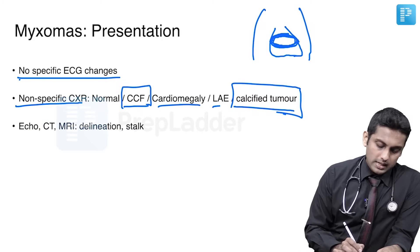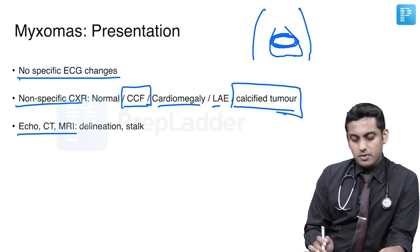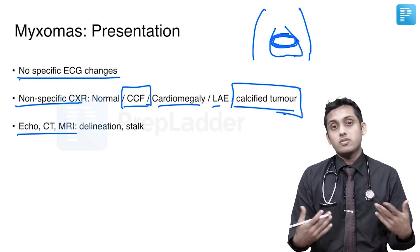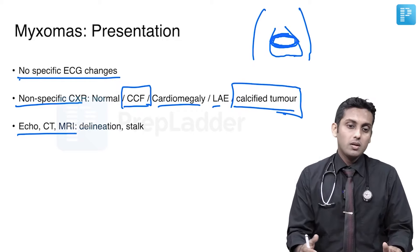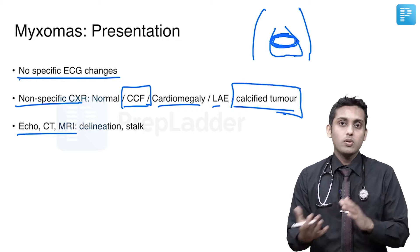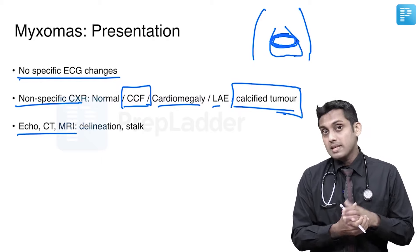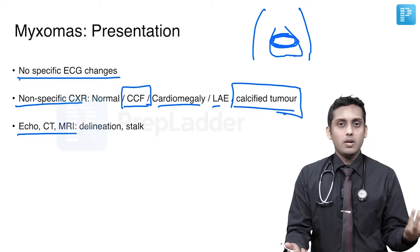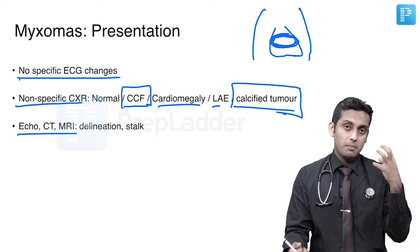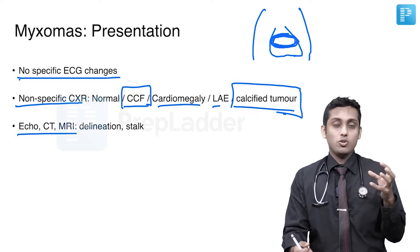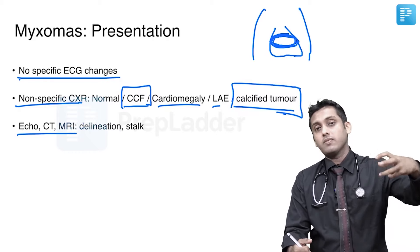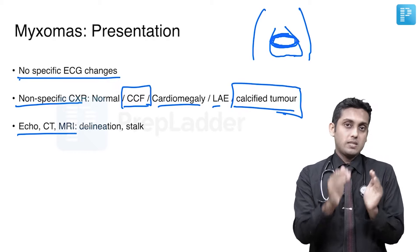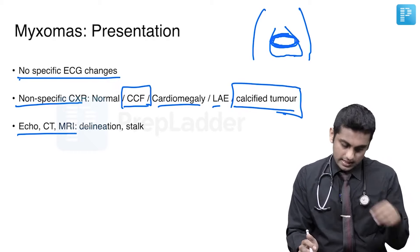On echo, CT, and MRI, the myxoma will be picked up easily and straightforwardly without requiring a modified view. What becomes important is planning for surgery: delineating whether it is a sessile myxoma, where its stalk is, and which part of the interatrial septum is involved, so that we can advise the surgeon what to expect when excision is planned.